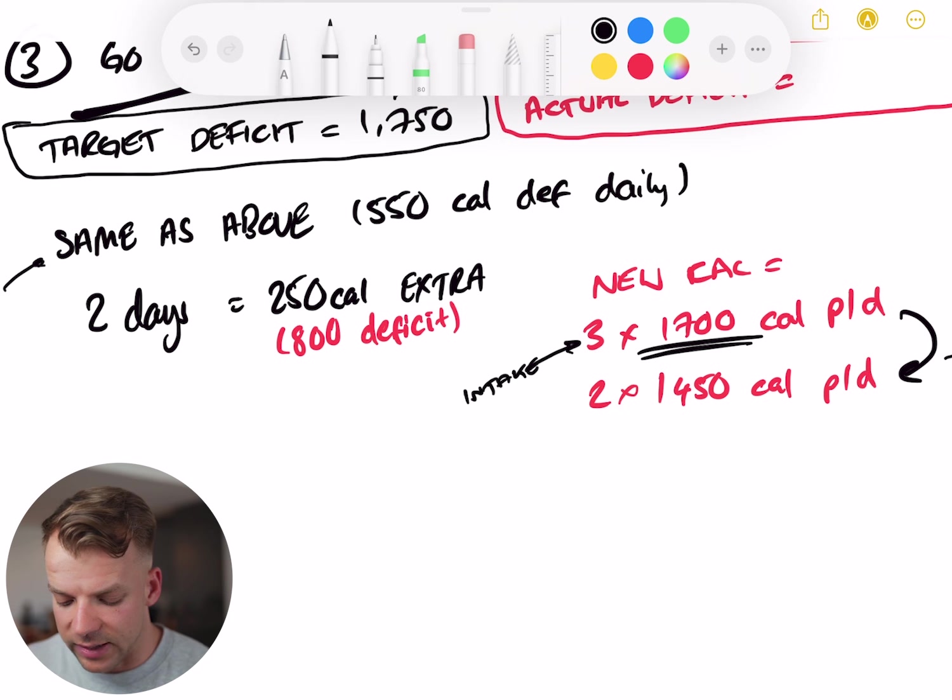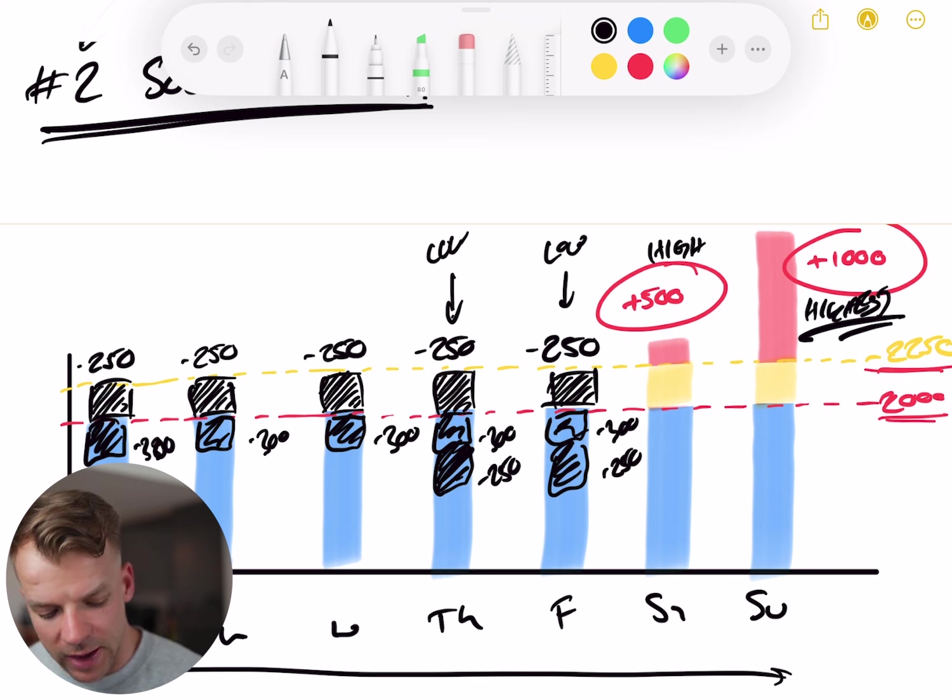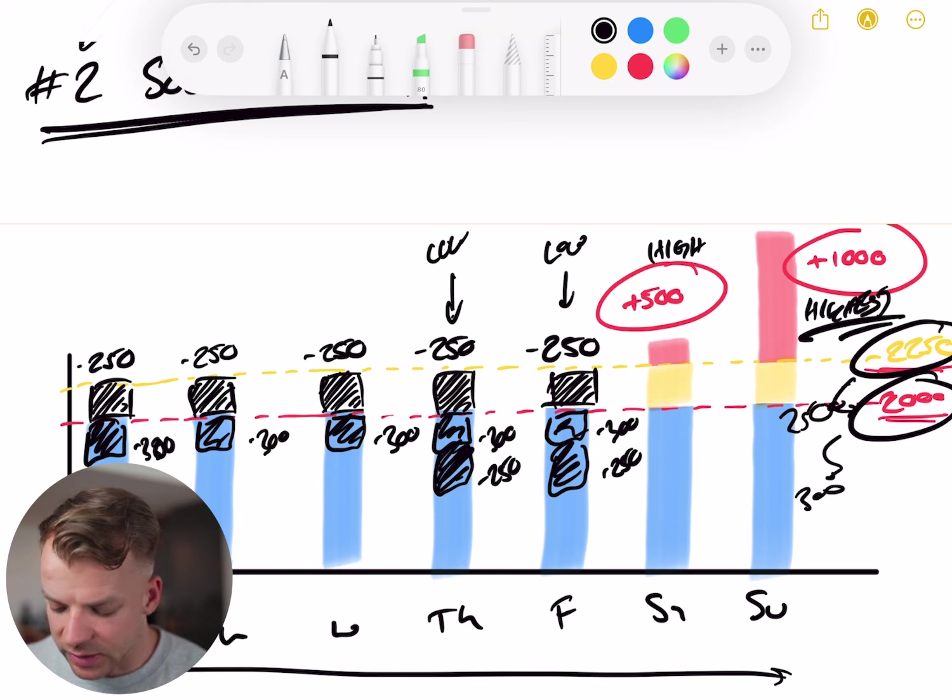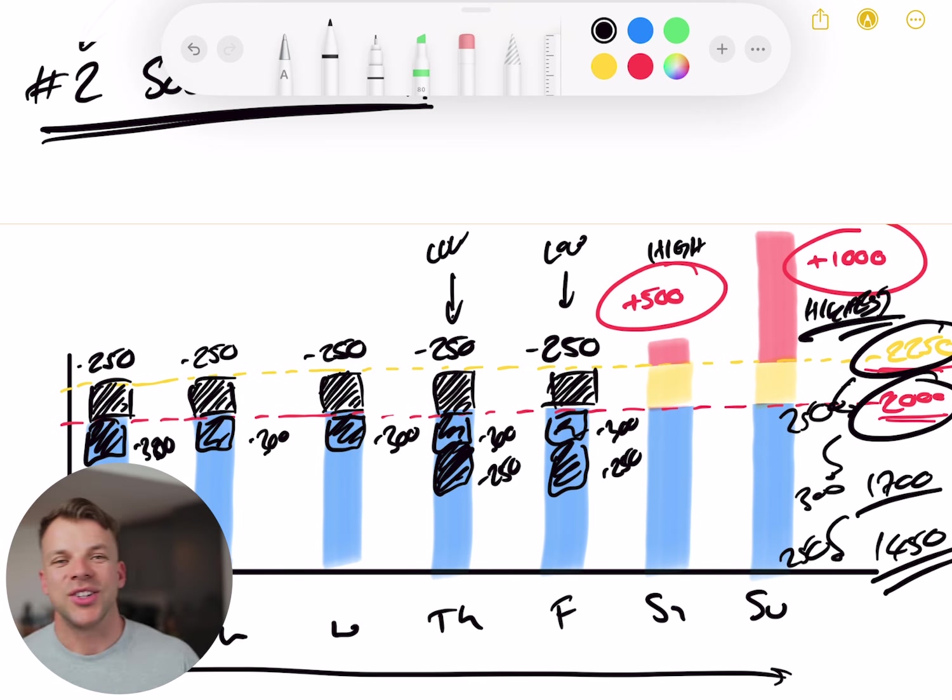So if we take the intake of three days being 1,700 and two days being 1,450 per day, that means we get a new deficit of our target, which is 1,750 calorie deficit by just adding two extra days where we have 250 calories less. Which just for context would mean that if we've done the 2,250 calories, we've minused the 250 to get to the original 2,000 calorie target. We've minused 300 again to get to the 1,700 calorie day. And then we've minused the 250 again, we're going to get 1,450 calories per day.